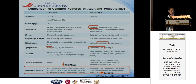We know that pediatric MDS is very different from adults. Bilineage cytopenia is the most common in children, and hypocellular bone marrow is also more common in children. The karyotype shows that monosomy 7 and 7Q-minus are the most common cytogenetic abnormalities in children. Also, the most important difference is that the therapeutic options in children are very different.